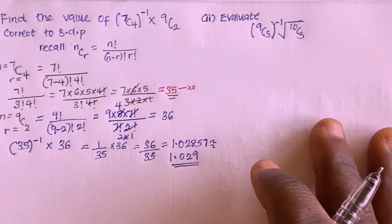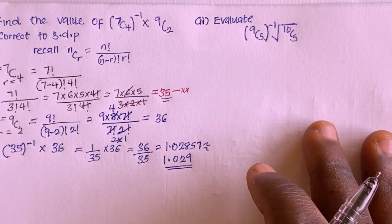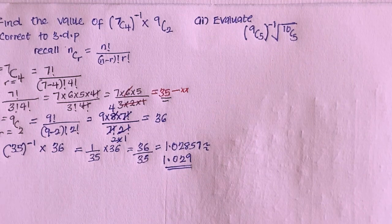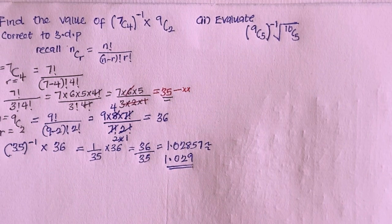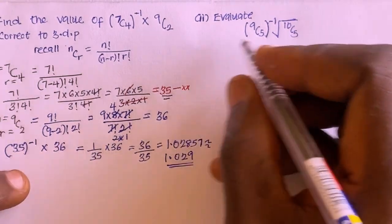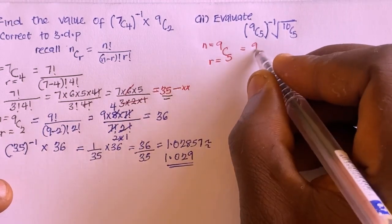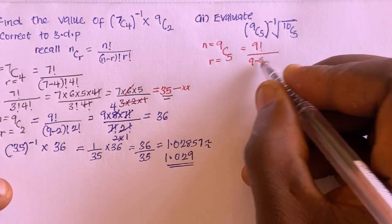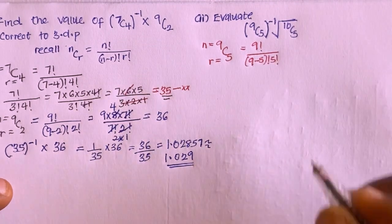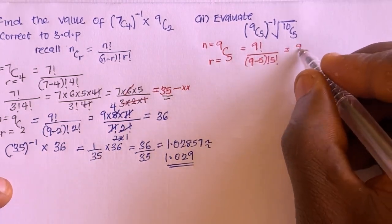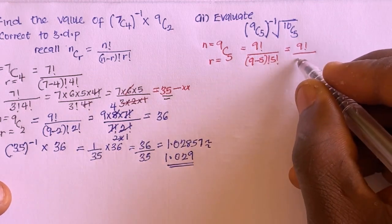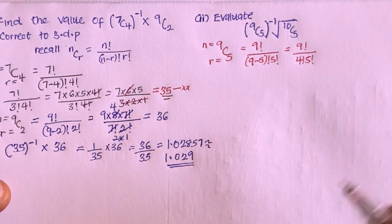Moving to the second question: we are asked to evaluate 9 combination 5 inverse times the square root of 10 combination 5. Evaluating means I just solve for the exact answer without rounding. For 9 combination 5, n equals 9 and r equals 5, so this equals 9 factorial divided by (9 minus 5) factorial times 5 factorial, which is 9 factorial divided by 4 factorial times 5 factorial.